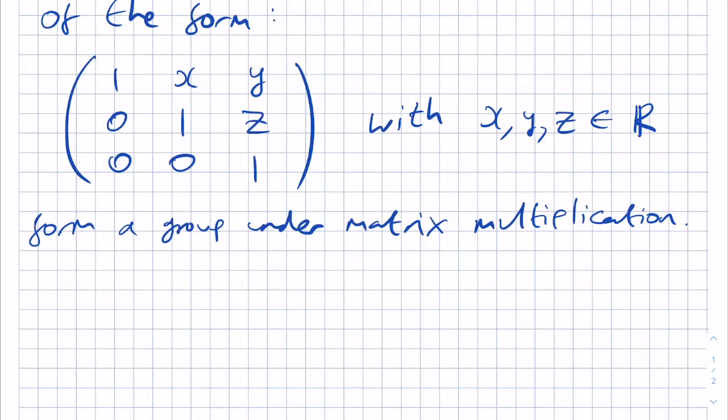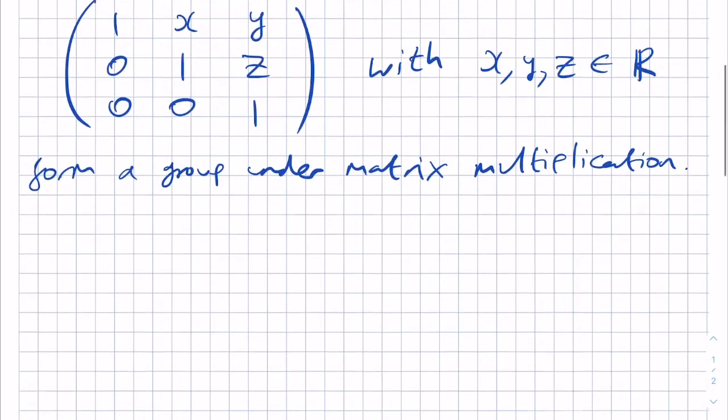We can start with closure, or showing that the operation of matrix multiplication is a binary operation, which is essentially the same thing. We need to show that if we take two matrices of the above form and multiply them together, we get another matrix of the same form.